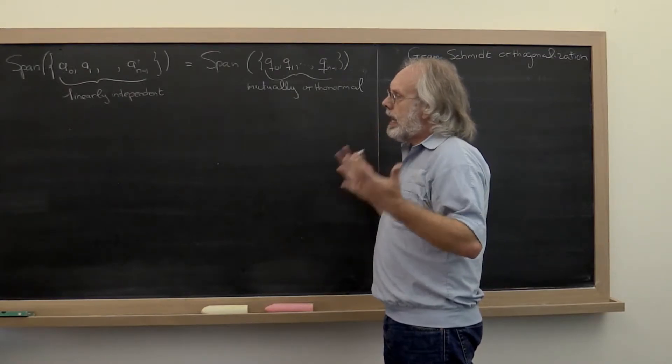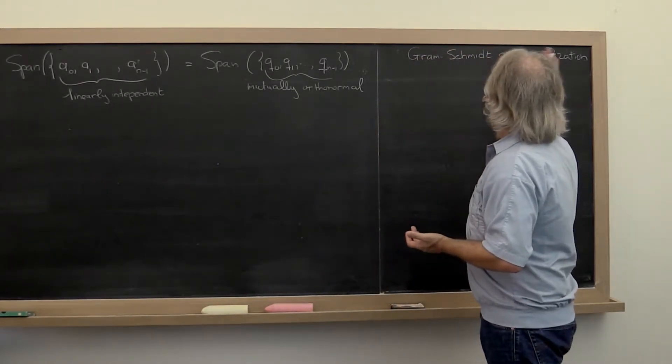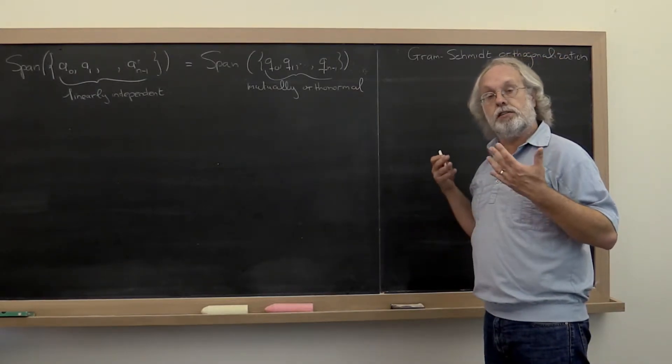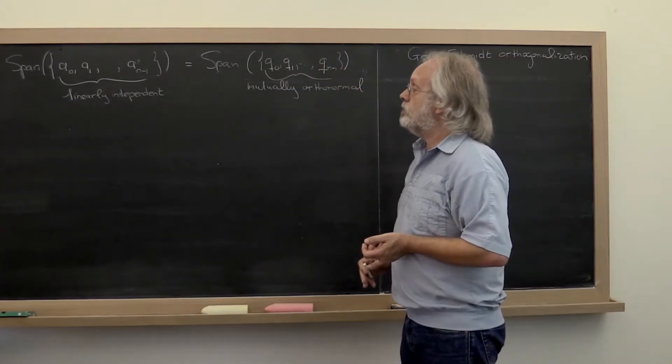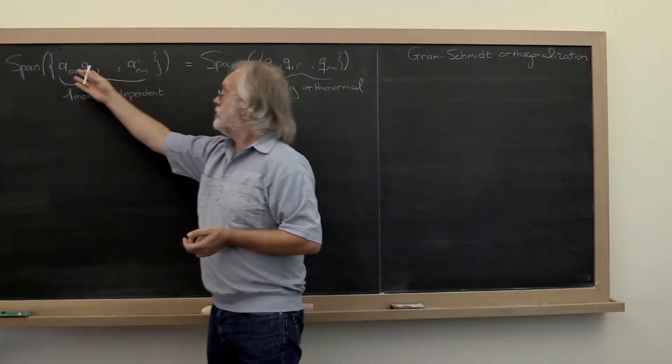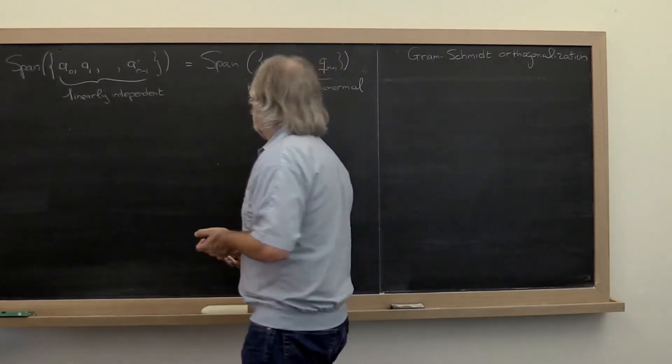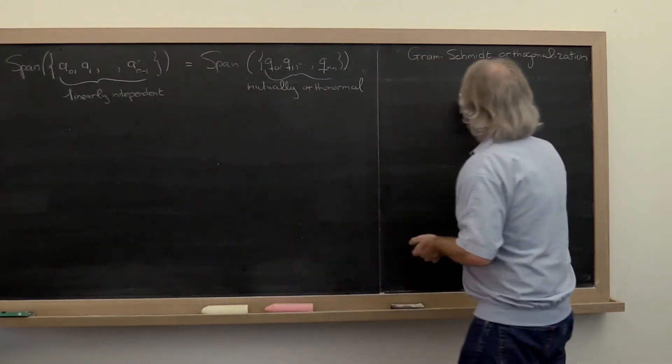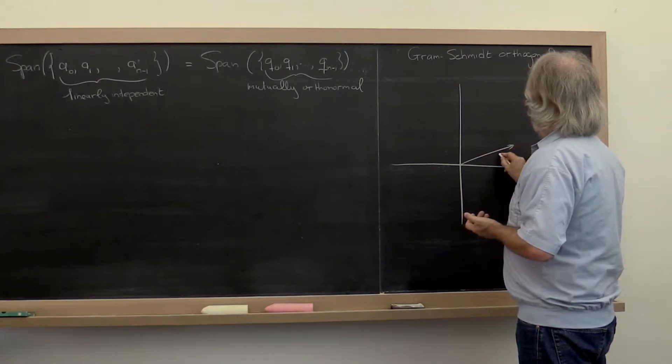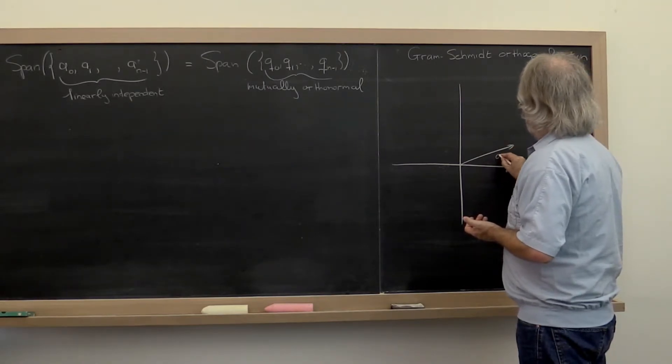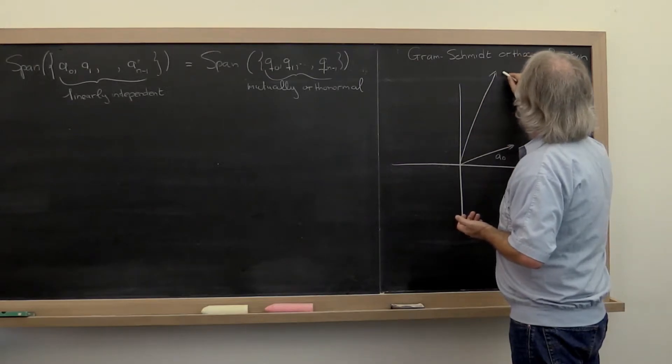So there's a classic result in linear algebra known as Gram-Schmidt orthogonalization that gives us an algorithm for computing q0 through q(n-1) from vectors a0 through a(n-1). Let's have a look in two dimensions.